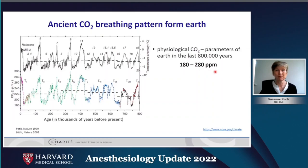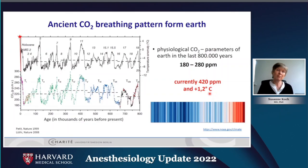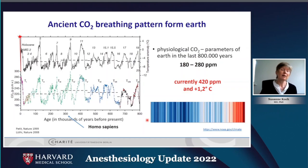You can see that the CO2 concentration never exceeded 280 parts per million — a very small concentration. Nowadays, since the 13th of April this year, we reached 420 parts per million. This is way out of the physiological CO2 pattern of earth from the last 800,000 years. It's important to know that Homo sapiens only exists since 300,000 years on earth, so no generation before us has ever lived in an atmosphere like we do at the moment.